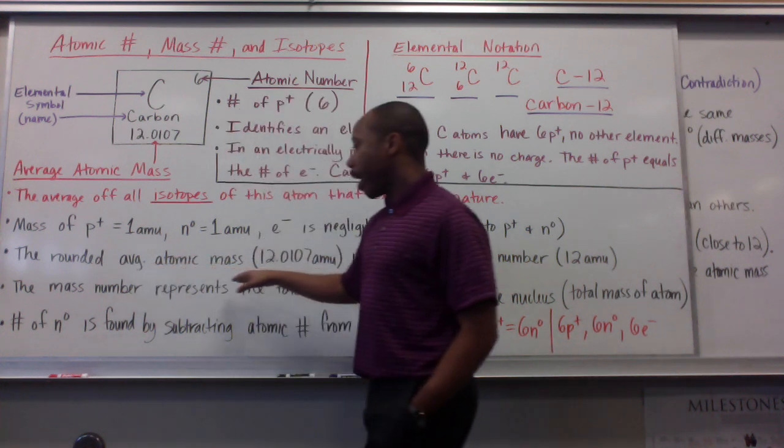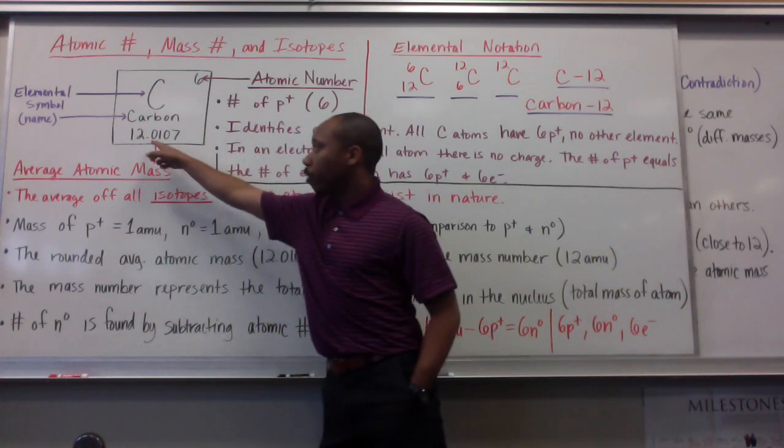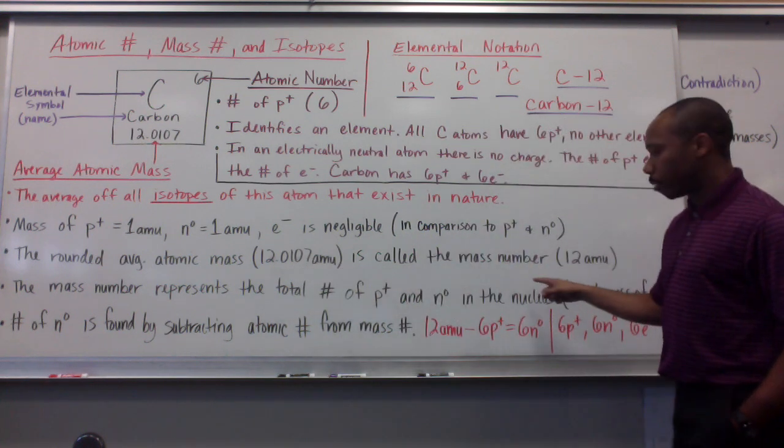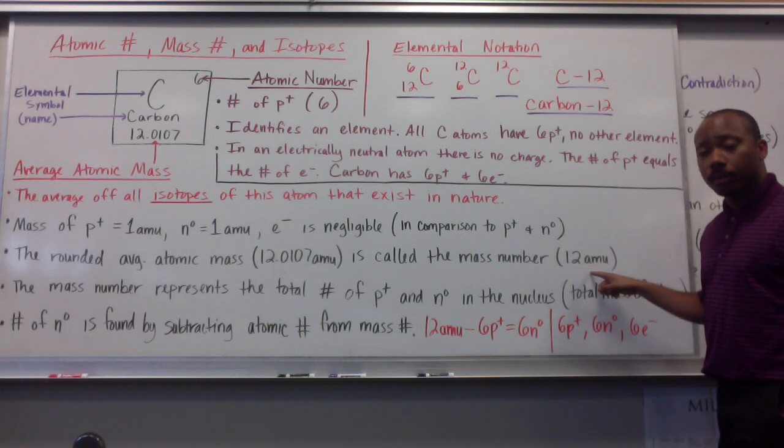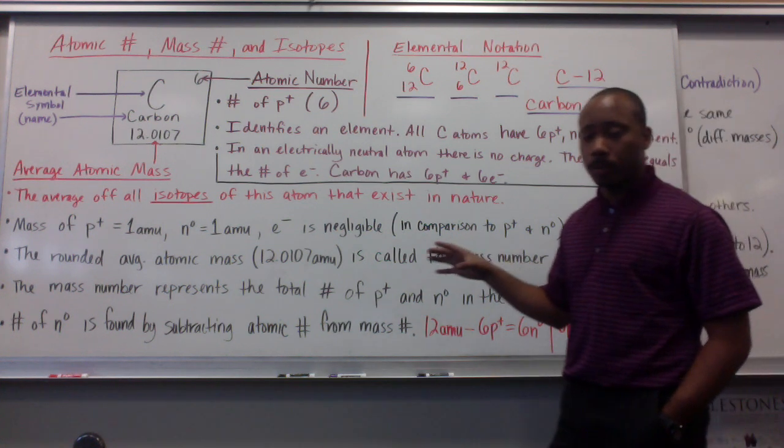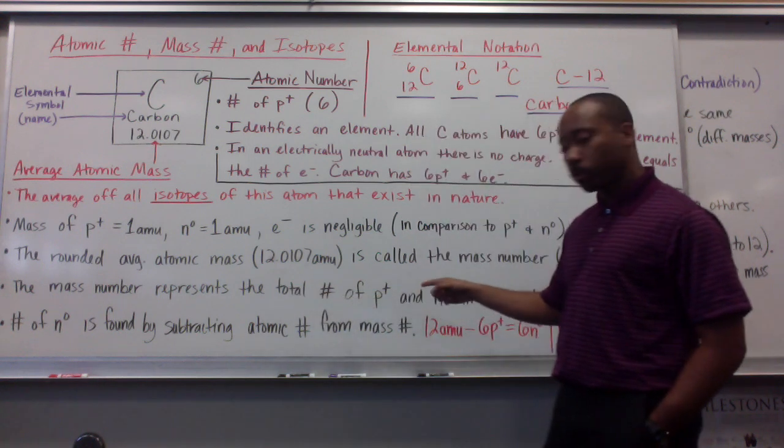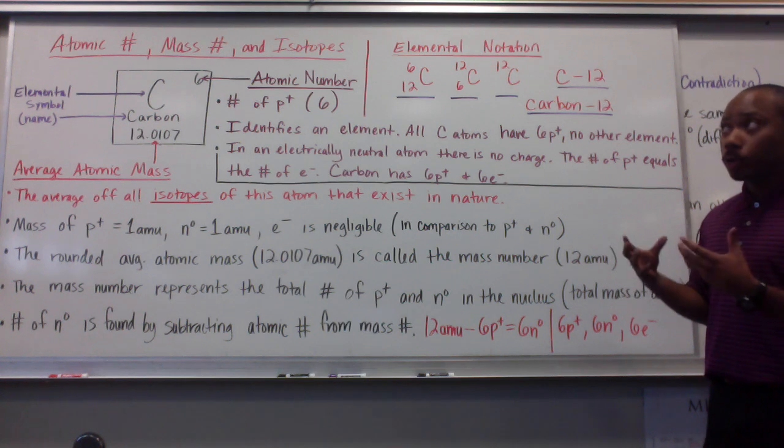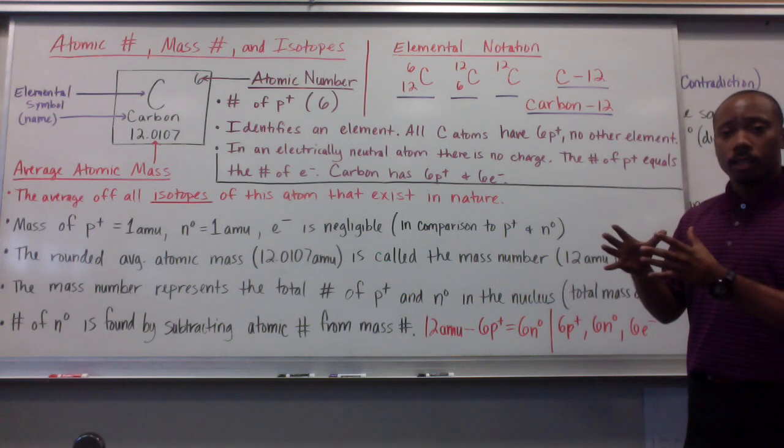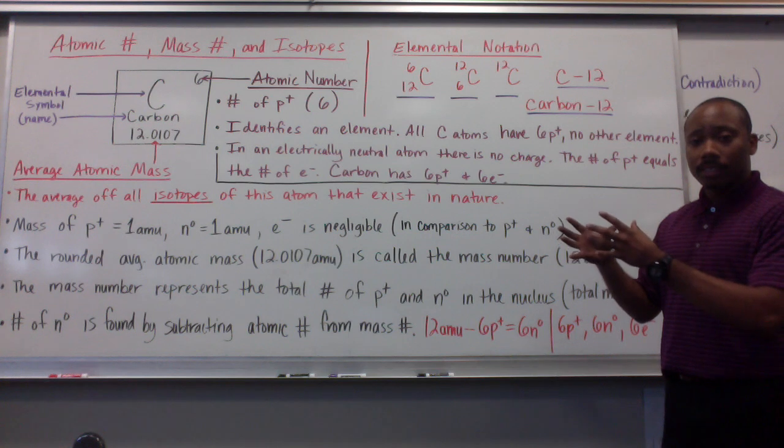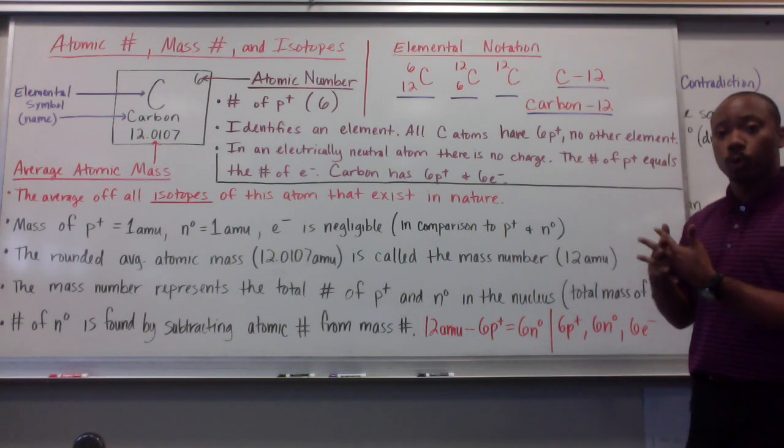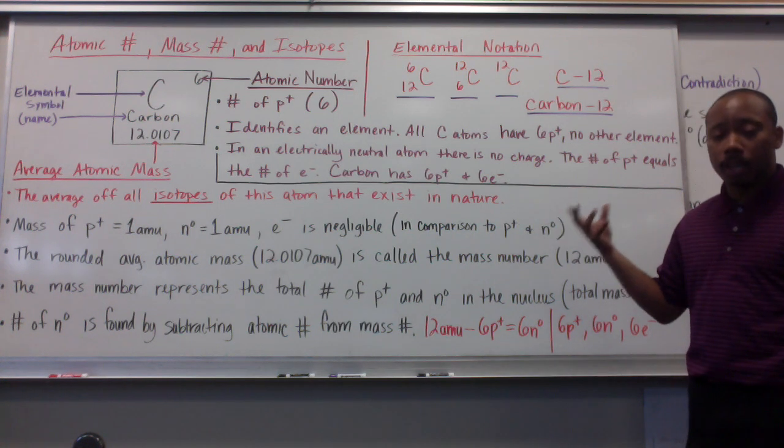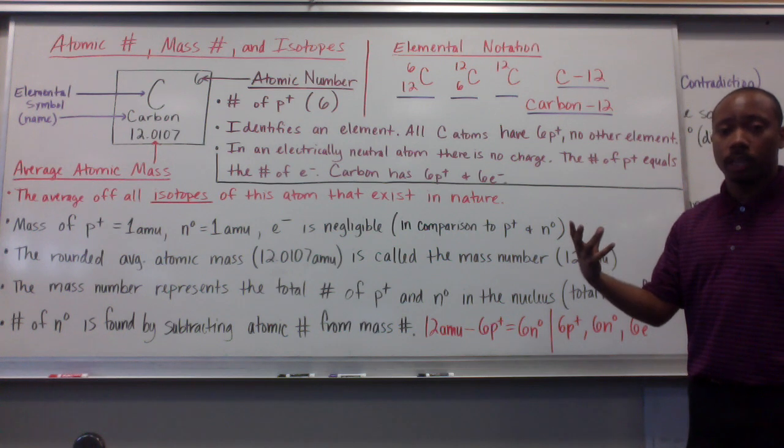The rounded average atomic mass, which we said before, is 12.0107. If we round this number, it's called the mass number. So, 12 amu. This number is important because the mass number represents the total number of protons and neutrons in the nucleus. And we know, since the mass of electrons is negligible, the total mass of the atom must depend on the total number of protons and neutrons. So, the mass number is the total mass of one atom of whatever element we're talking about.